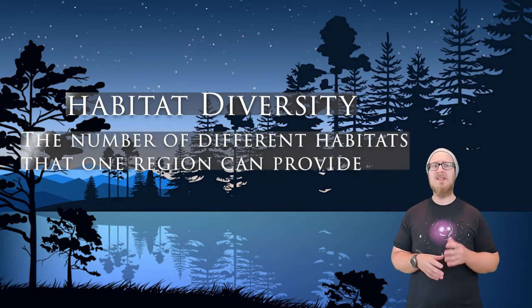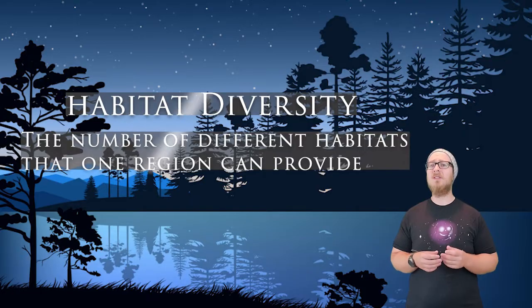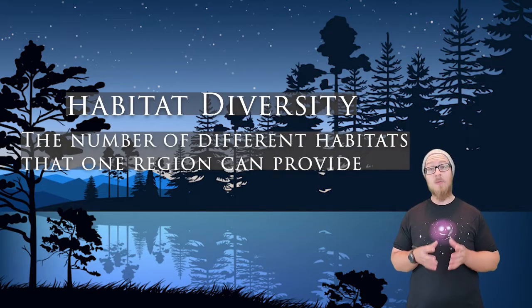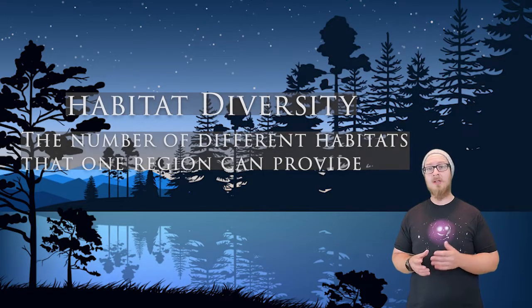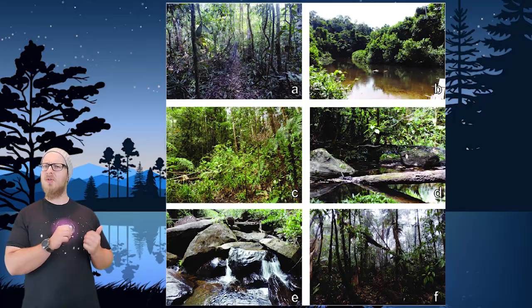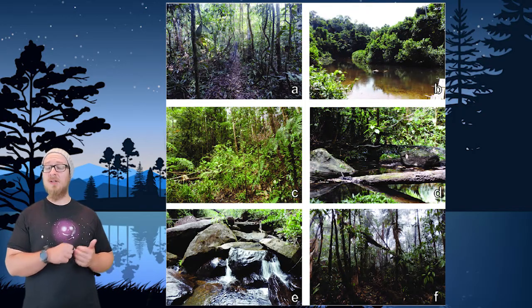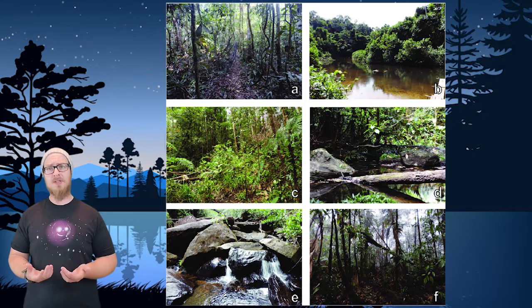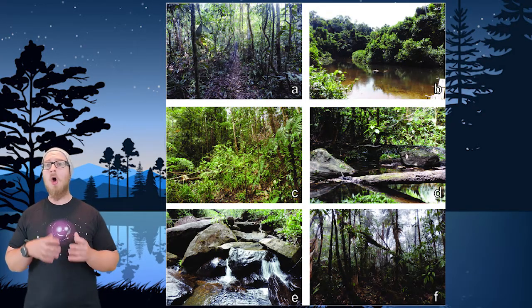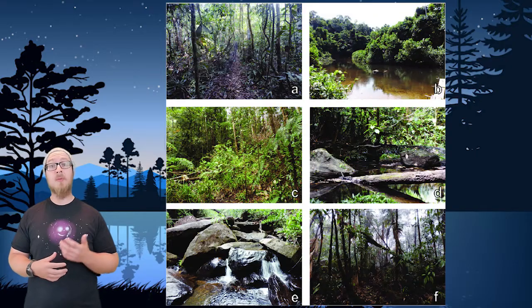The final scale of biodiversity is habitat diversity. Habitat diversity is the number of different habitats that one region can provide. The image we see here is an example of habitat diversity — all the different habitats present in a mountain range. The greater the diversity of habitat, the more exploitable niches there are.